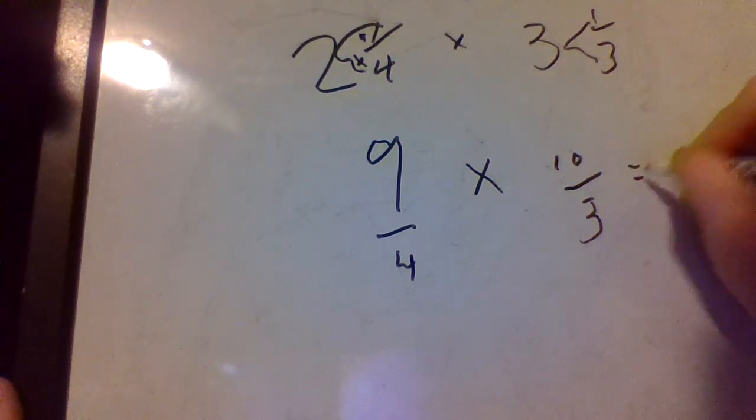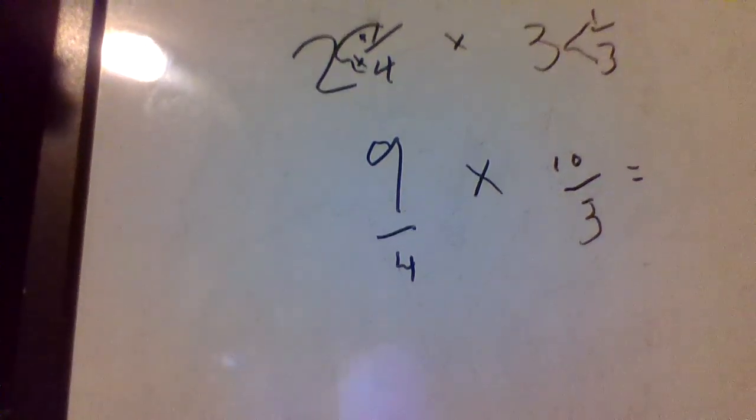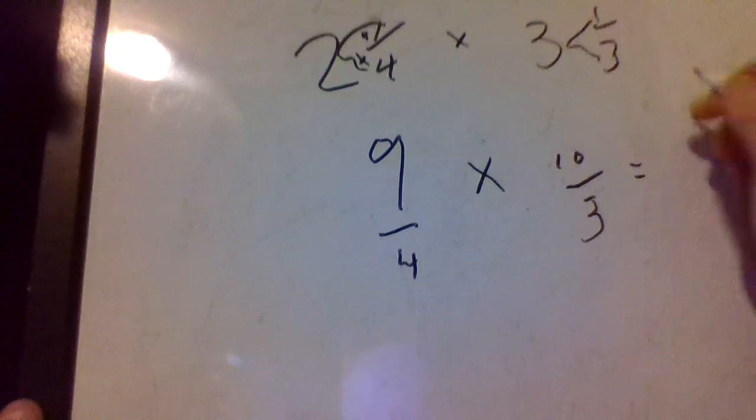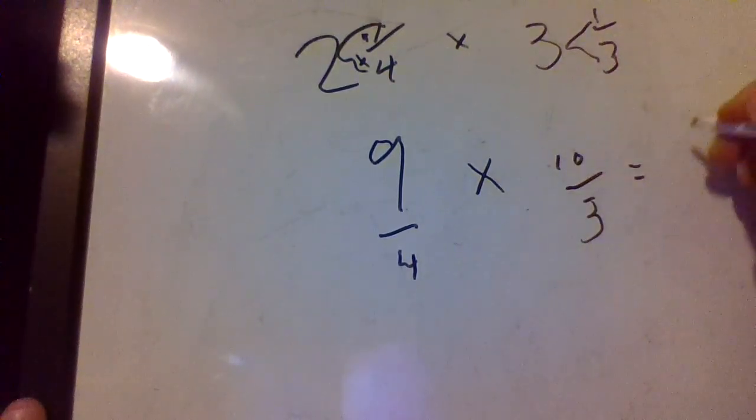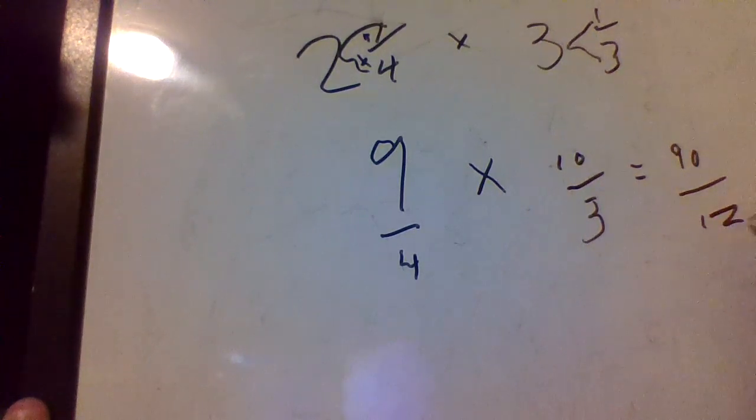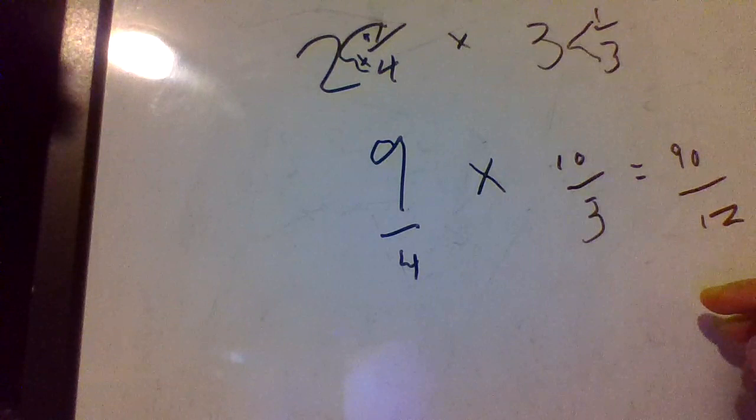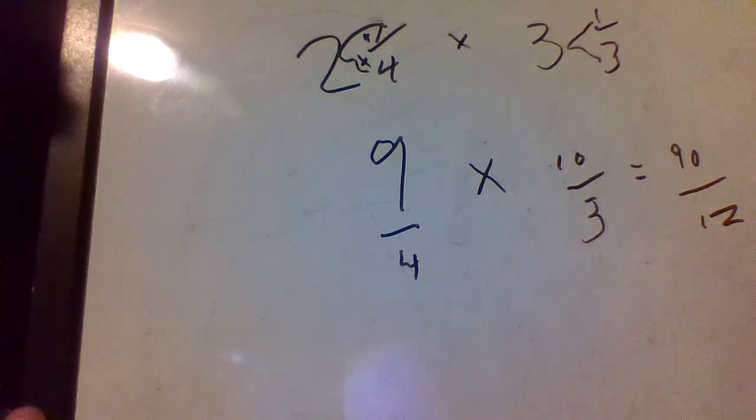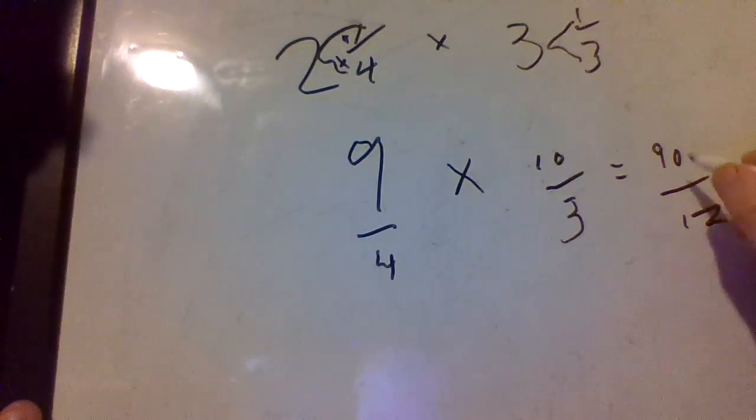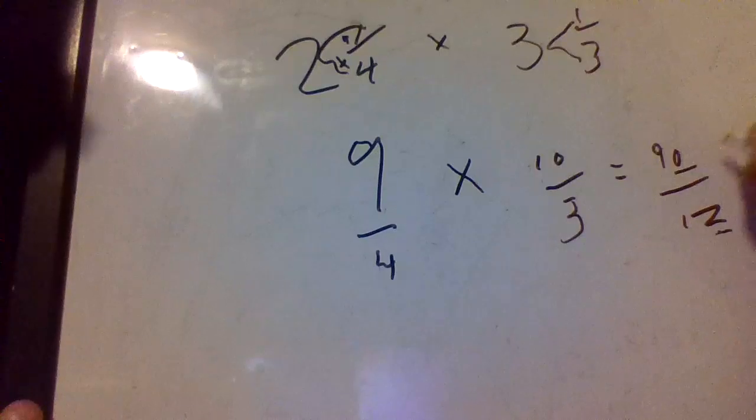All right, so before we get into how to make this simpler on ourselves, we're just going to do it straight across. So nine times ten is ninety and four times three is twelve. Now nine times ten, almost always we're going to have to simplify these. So here we are going to have to simplify—both numbers are even, you can tell by the last digit. So we're going to simplify by two.